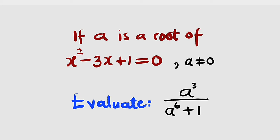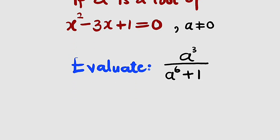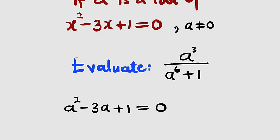First of all, you should remember that a root of a quadratic equation, when substituted into that quadratic equation, the result will be 0. So let us substitute a into this equation. If x is equal to a, we have a squared minus 3a plus 1 equal to 0.